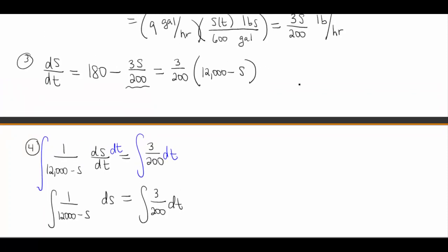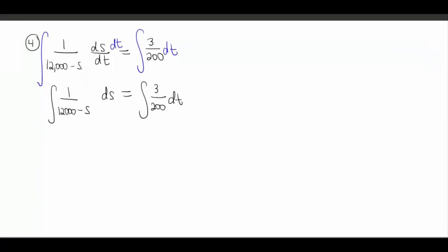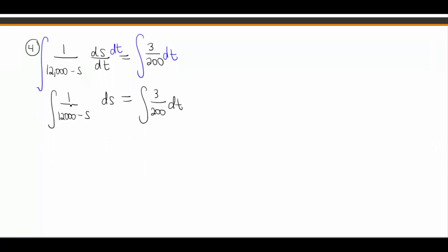Now these are fairly easy functions to integrate. The one on the left's not very nice, but it's doable. If you want to throw a u substitution at this, or just notice we're going to end up with a natural log because we have 1 over a linear factor. But we have to be careful about this extra negative in here. This is actually going to give us the negative natural log of the absolute value of 12,000 minus S. And then that's going to equal the integral of a constant, very nice. So this is going to be 3 over 200t plus C, although this C is going to be evolving. So we'll just call it C1 for now.